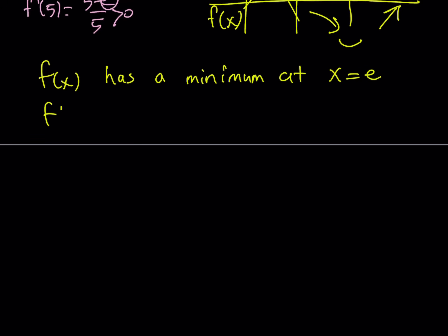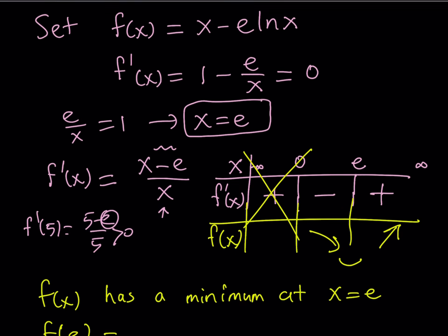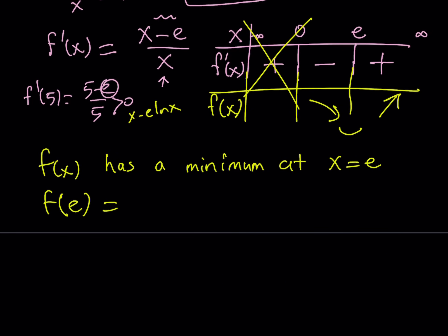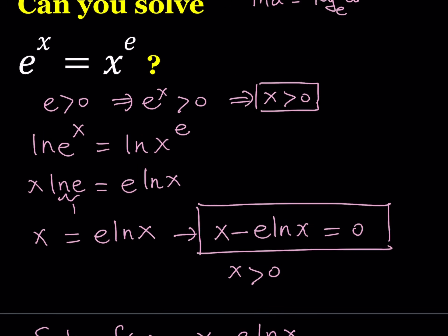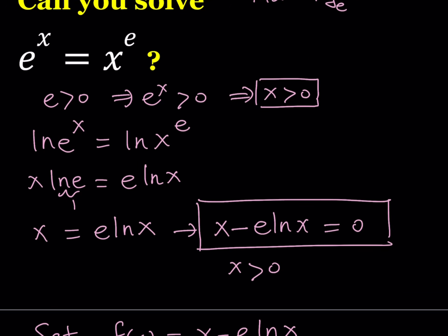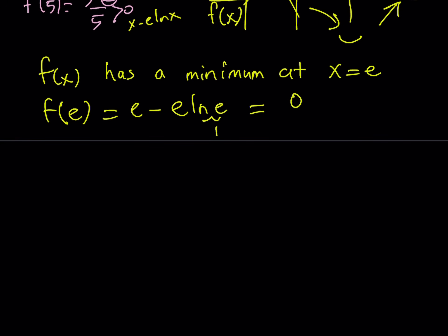Let's see what that minimum value is by substitution. Our function is x minus e ln x, so let's replace x with e. We get e minus e times ln e. Since ln e equals 1, this is e minus e, which equals 0. So we have actually found a solution — and this shouldn't be surprising because you probably guessed that x equals e would be valid, since e to the power e equals e to the power e. So x equals e gives us a solution because it makes our function equal to zero. Remember, we were looking for a solution to x minus e ln x equals 0. But are there any other solutions?